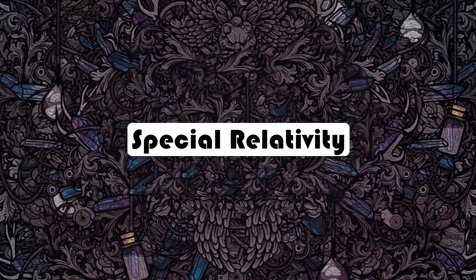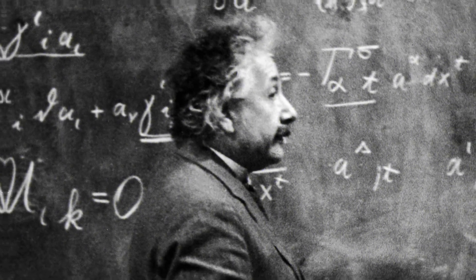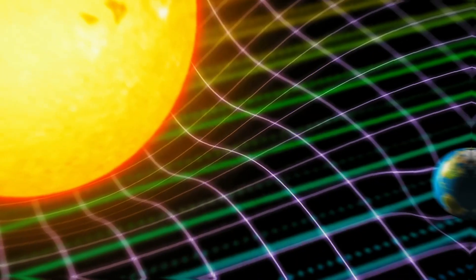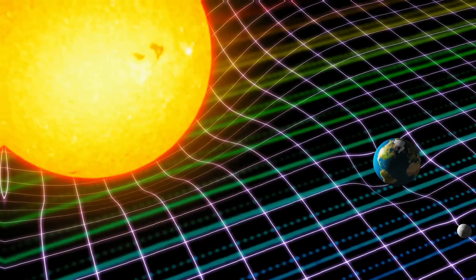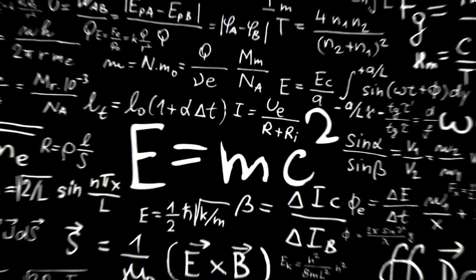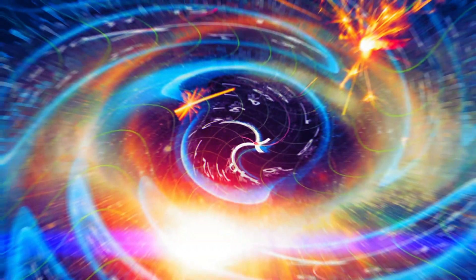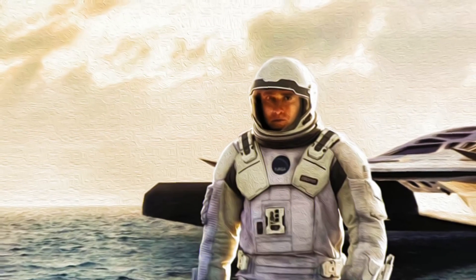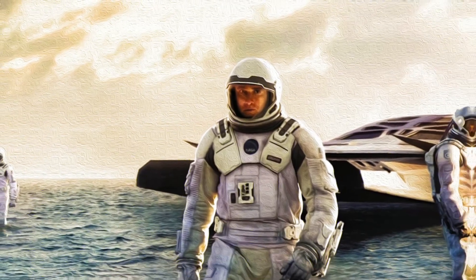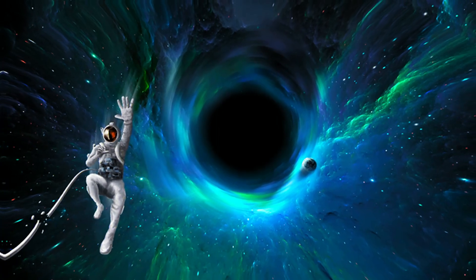Albert Einstein's Special Theory of Relativity, published in 1905, introduced the concept that time is relative and can vary depending on one's relative motion. The famous equation E equals mc squared emerged from this theory, demonstrating that energy and mass are interchangeable. Special relativity also gave rise to the idea of time dilation, where time slows down for an object in motion relative to a stationary observer.